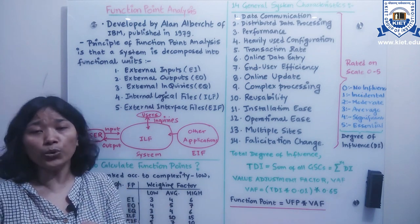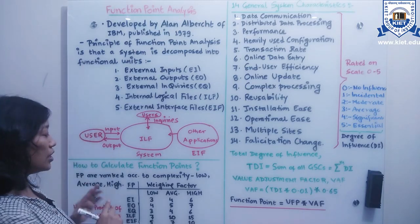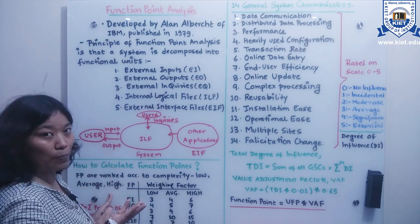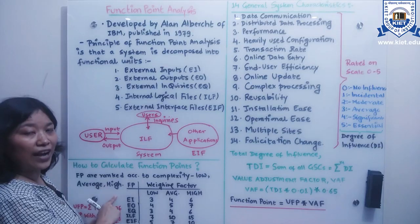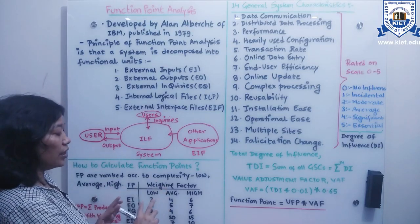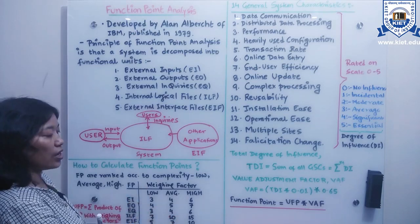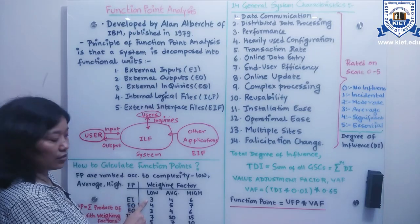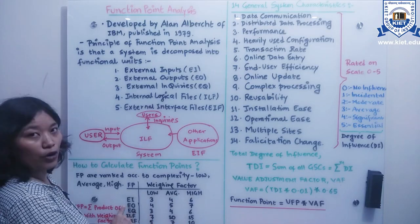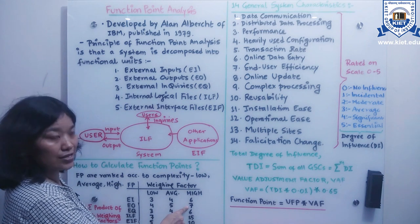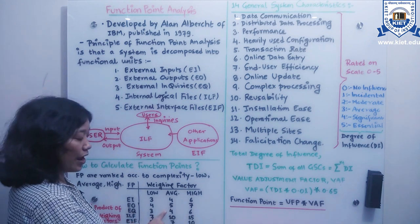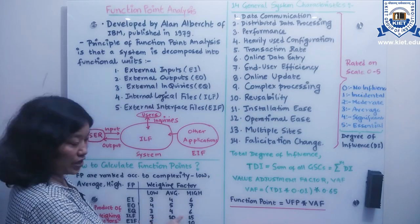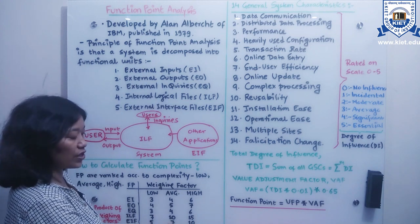How do we calculate function points? Initially, we rank each function point based on its complexity — low, average, or high — using predefined standard weighing factors. For external input: low=3, average=4, high=6. For external output: low=4, average=5, high=7. For external inquiries: low=3, average=4, high=6. For internal logical files: low=7, average=10, high=15. For external interface files: low=5, average=7, high=10.